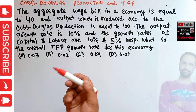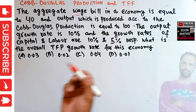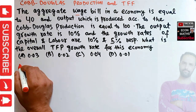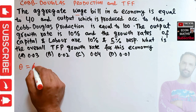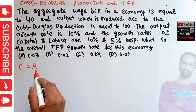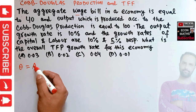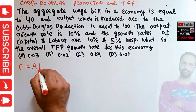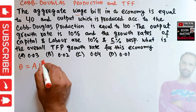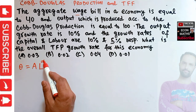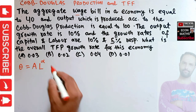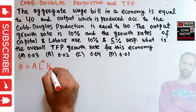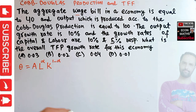We are being given the wage bill. So first let me write the general Cobb-Douglas production function. Our Cobb-Douglas production function looks like this: Q, our output, is equal to A — what we call the Solow residual, or total factor productivity, or state of technology — times L, units of labor, raised to the power alpha. This shows us the output elasticity of labor — how much output increases when there is a one percent increase in labor — times K to the power 1 minus alpha, which shows us output elasticity of capital.